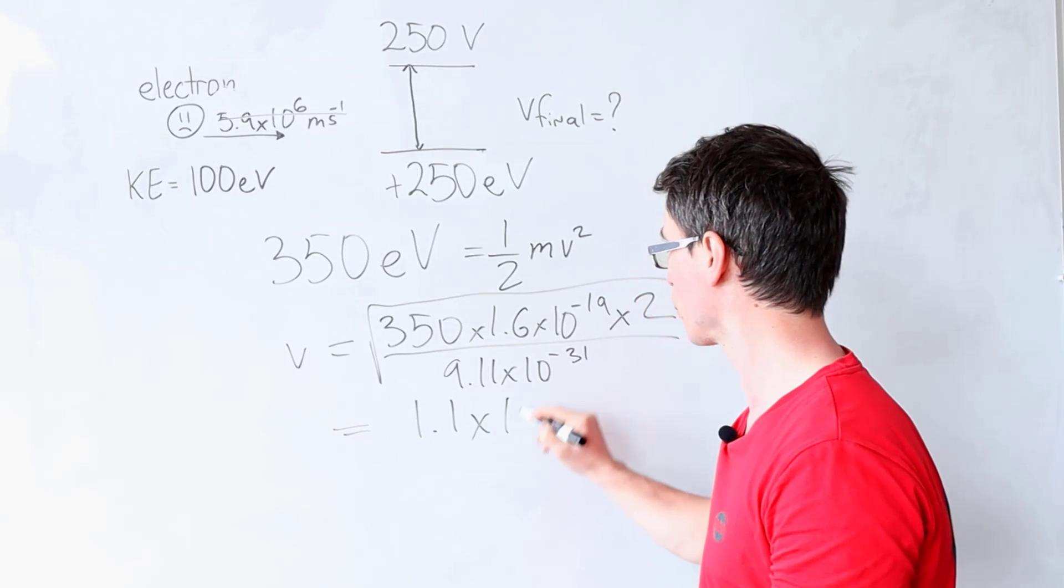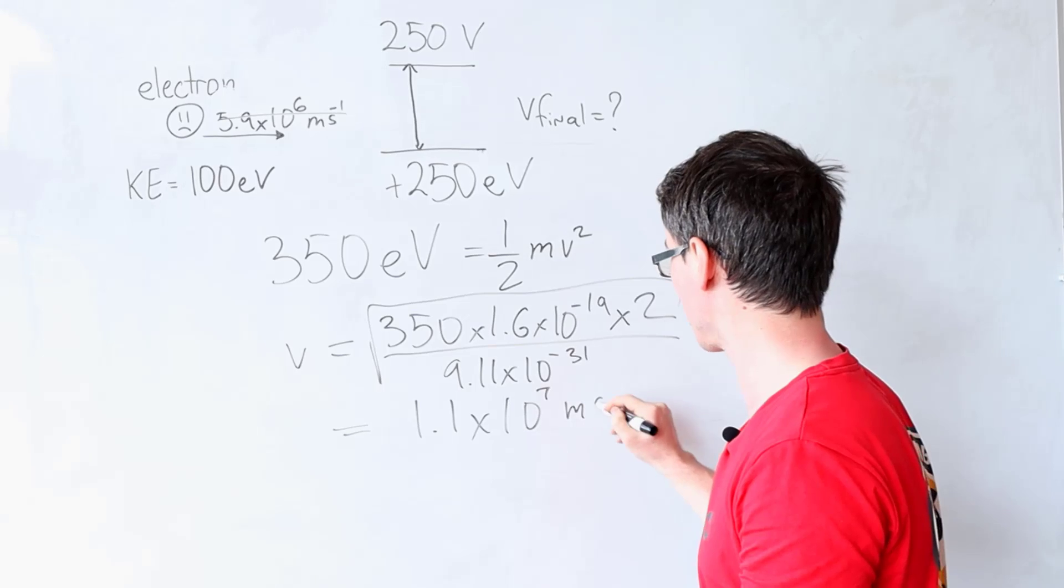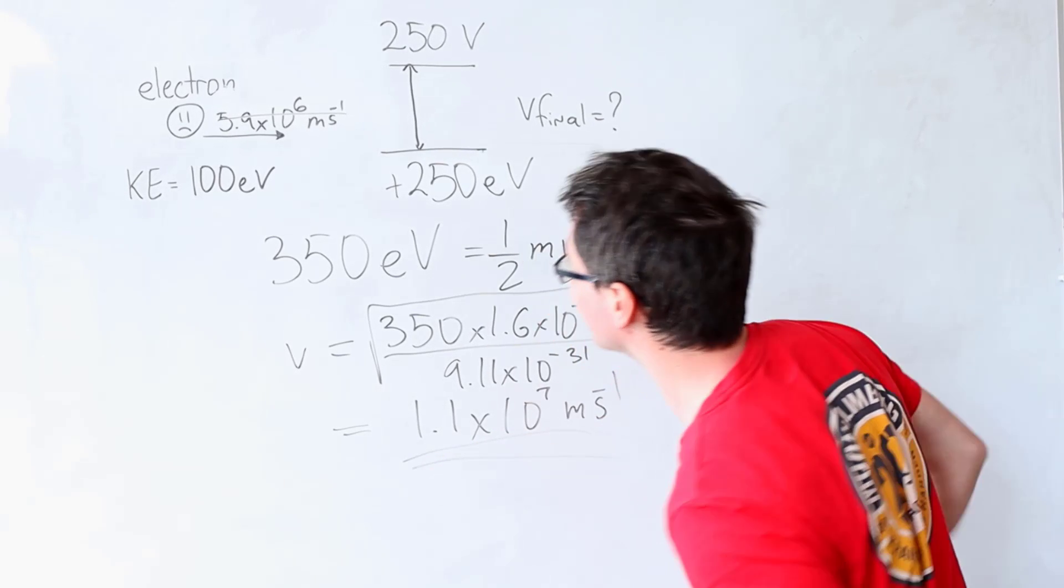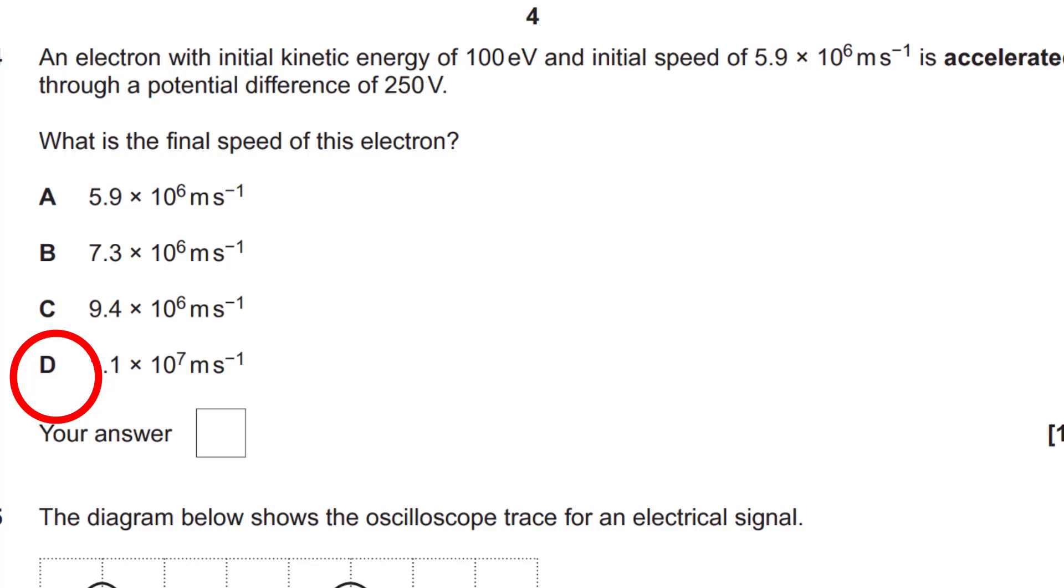Let's square root this entire expression, and if we do that correctly, we're going to get around 1.1 times 10 to the power of 7 meters per second, meaning that the correct answer is D.